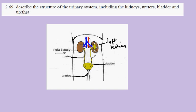From each kidney, there is a tube that leads to the bladder, and this is called the ureter. The ureter carries urine from the kidney to the bladder.